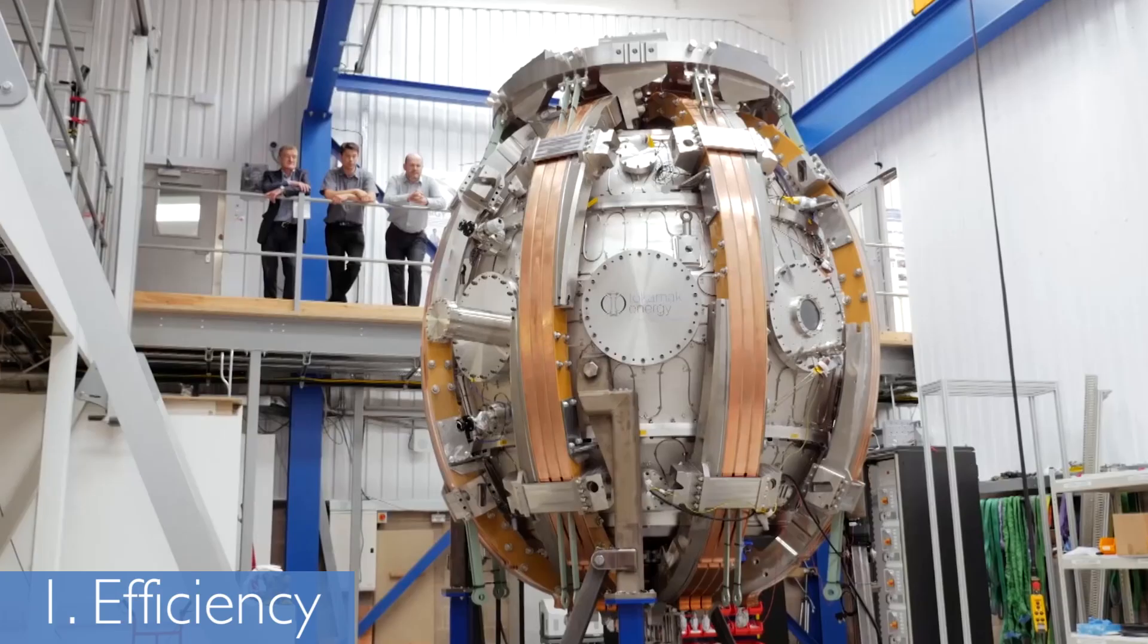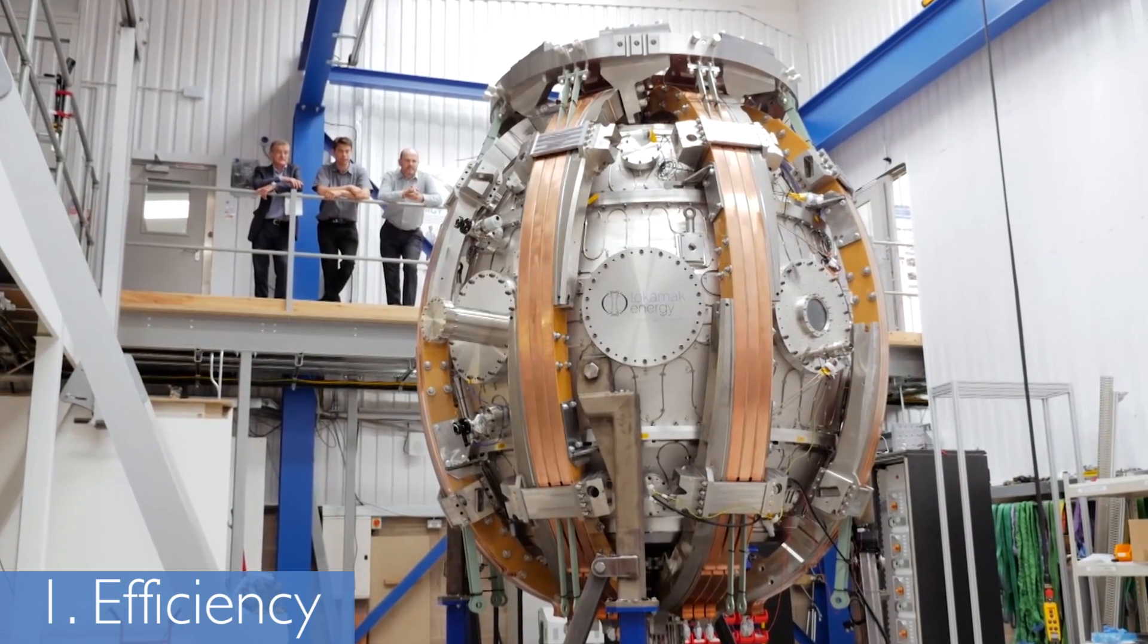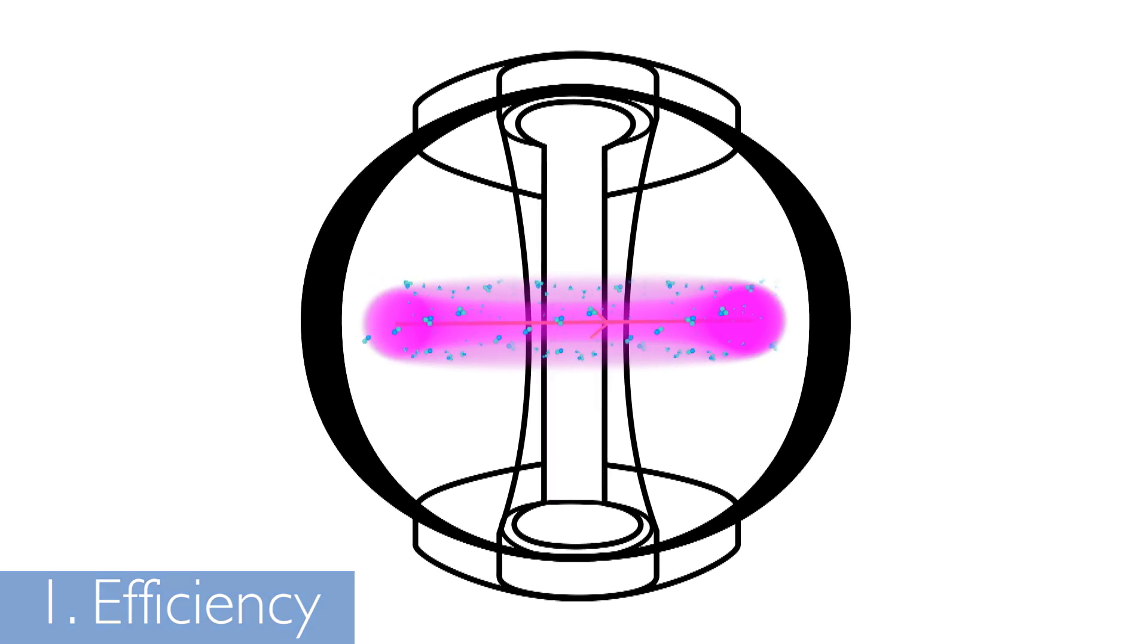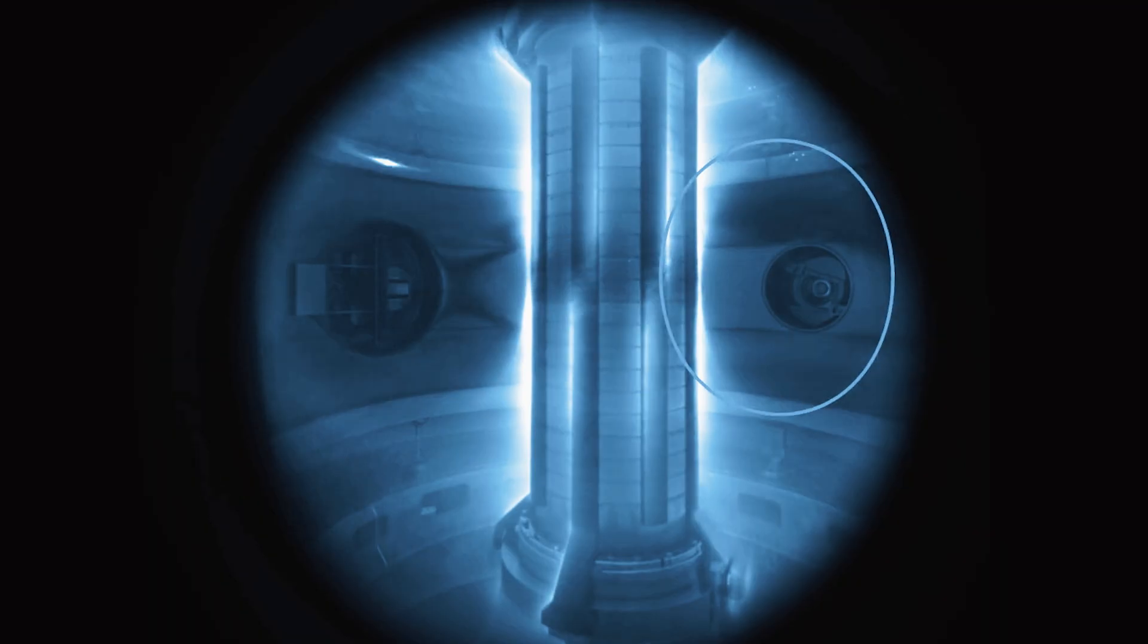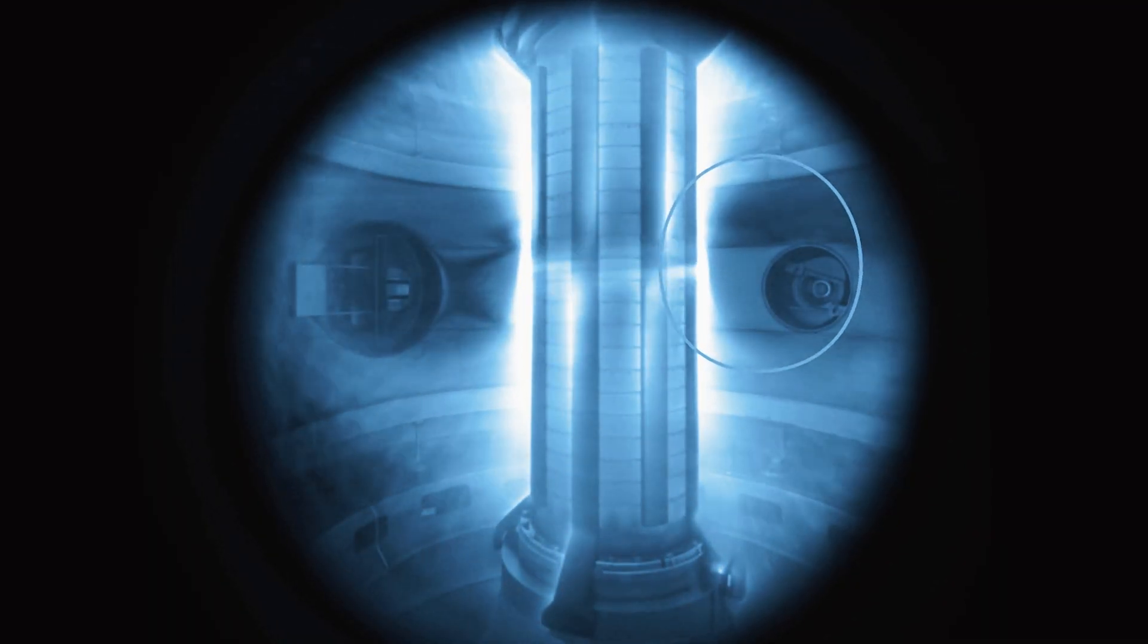Spherical tokamaks have four key advantages over conventional tokamaks. They are more efficient because the magnetic field is stronger closer to the center of the ring, and in the squashed spherical design the plasma sits closer to the center.